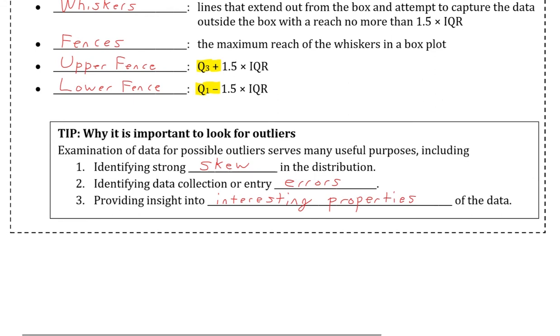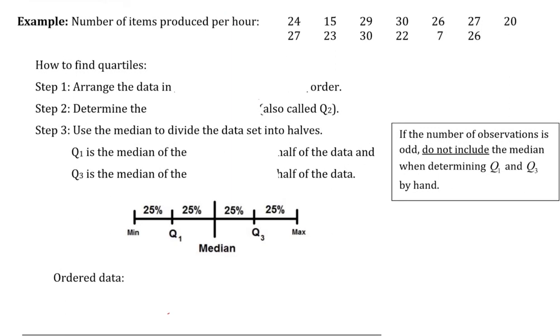Let's look at an example on the next page that will have us calculate the five-number summary and create the box plot. Here we have a number of items produced per hour. There are 13 observations listed, 24, 15, up to 26. When we're trying to find quartiles, the first thing we're going to do, just like when calculating a median, is arranging the data in ascending order, and then we will calculate that median, also known as Q2. Once we have the median, we will use the median to divide the dataset into two halves. Q1 is the median of the first half of the dataset, and Q3 will be the median of the second half of the dataset. Note on the right side here, if the number of observations is odd, do not include the median when determining Q1 and Q3 by hand, which you will see in this example.